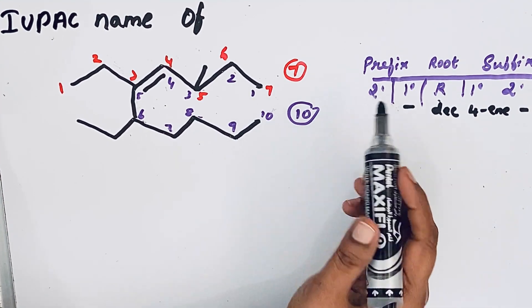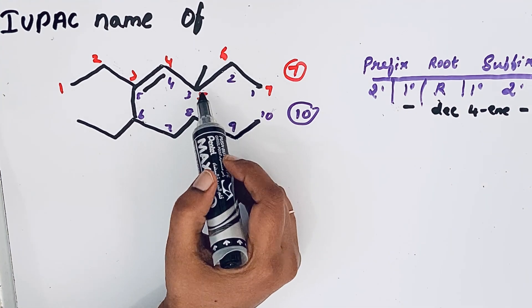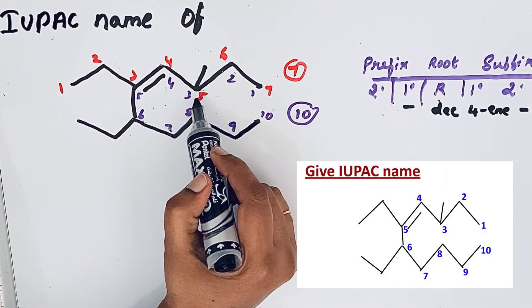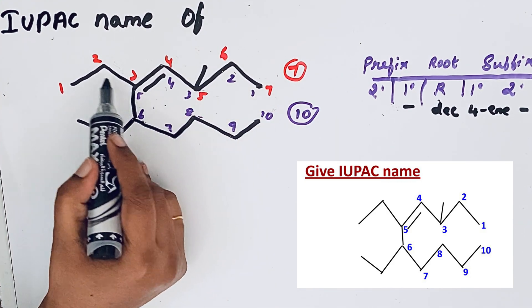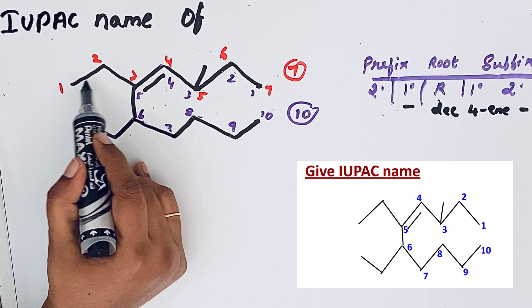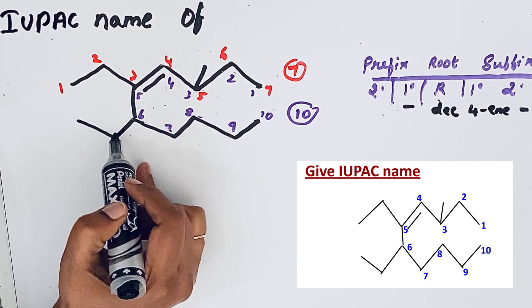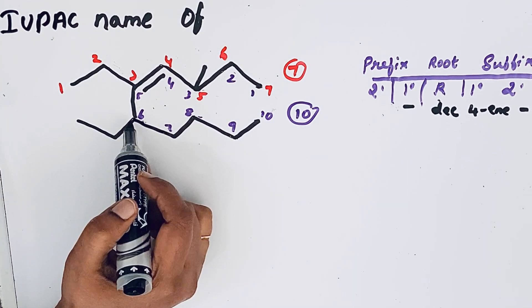Then for the secondary prefix you can see that some substituents are there. For example, in the third position one methyl group is attached. Then in the fifth position ethyl group, and again in the sixth position also we have that ethyl group.